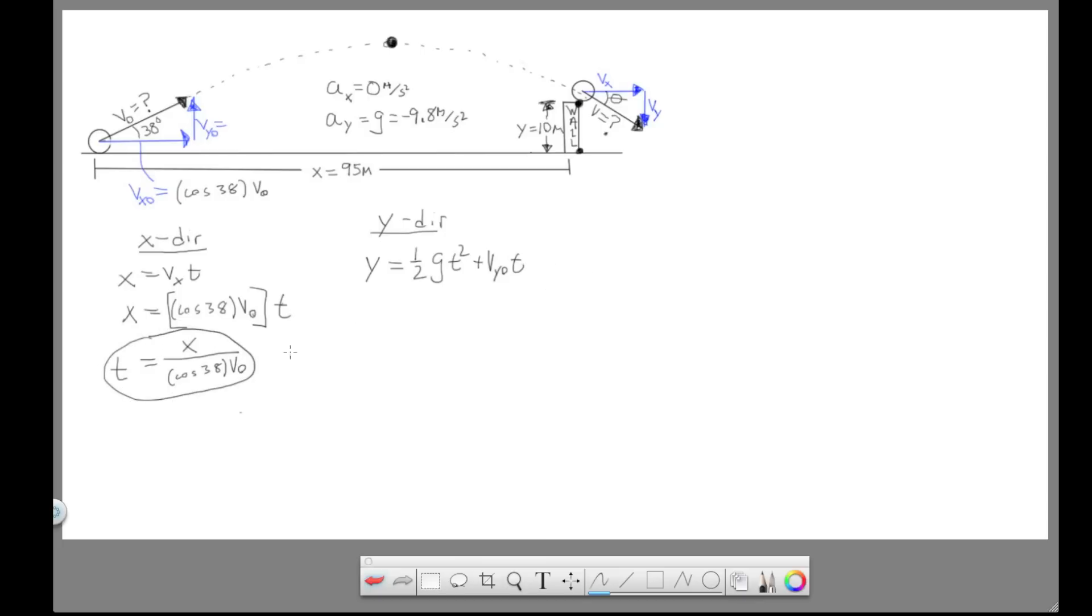I'm going to take this and plug it in there and there. So here's where the algebra gets a little bit intense. So all of that is square. That looks a little bit scary, but not too bad. And then VY initial, so right here we have VY initial. VY initial is equal to sine 38 V initial. So we're going to plug that in right here.